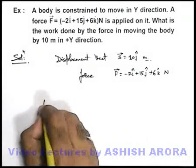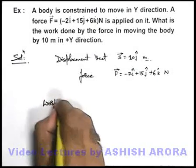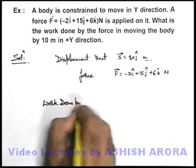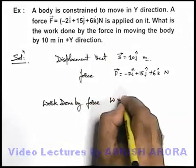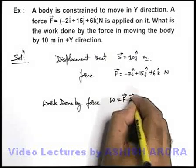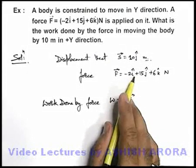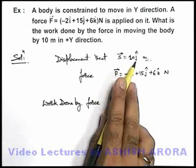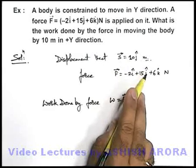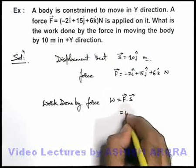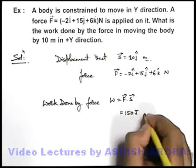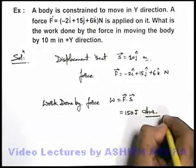If we wish to calculate the work done by the force, we can directly write work done by the force as F dot S. If we just take the dot product, we can simply state when we take the dot product, only the term of j cap dot j cap will be left over, rest all terms will become zero. So it will become 150 joule. That is the answer to this question.